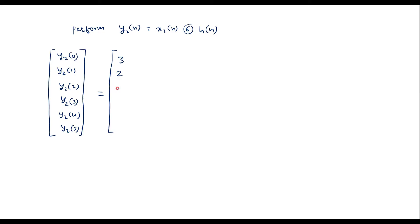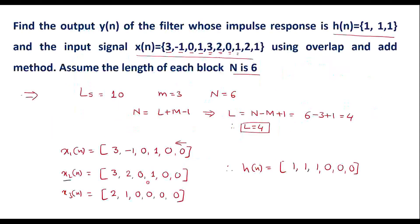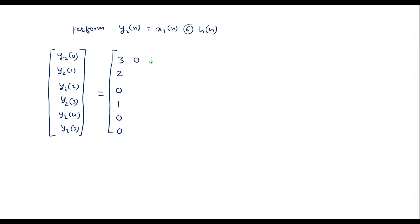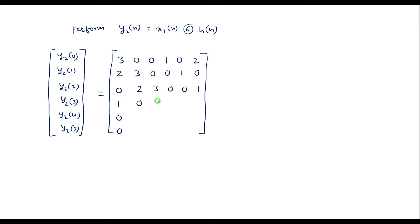Write the same x2[n] sequence in reverse order: 0, 0, 1, 0, 2, 3, and then form the circulant matrix rows by successive cyclic shifts.